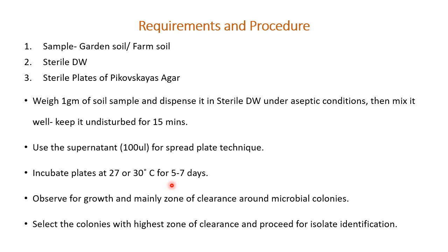The reason for 5 to 7 days incubation is that cultures will first start growing and then slowly start solubilizing phosphate, so it requires time to observe clear zones. After incubation, observe for growth and mainly for zones of clearance around microbial colonies, then select the colonies with the highest zone of clearance and proceed for isolate identification.